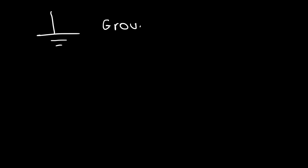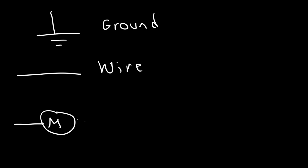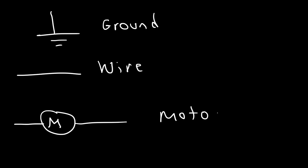Some other symbols you need to be familiar with: a ground — that's the symbol for that. This is simply a wire. And if you have a motor in a circuit, you can write M for a motor. A motor converts electrical energy into mechanical energy, and if you spin it yourself, you can convert mechanical energy into electrical energy.